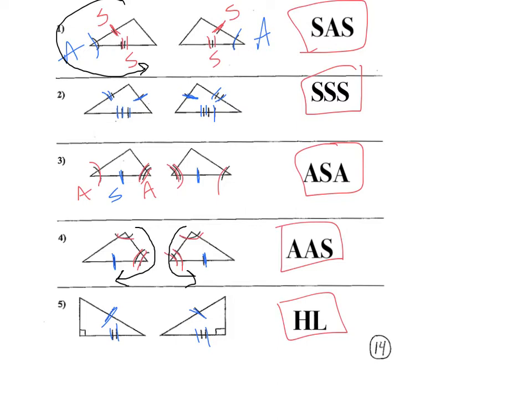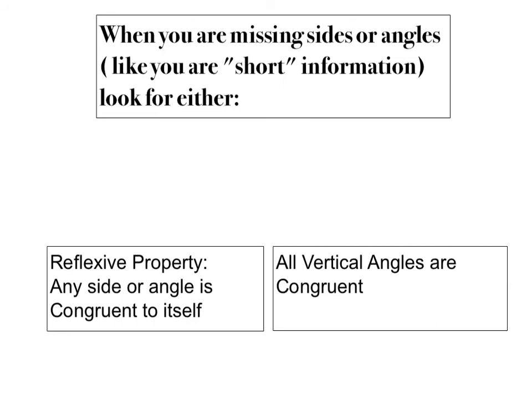I need you to write these two definitions down. On the next page, when you are missing sides or angles — when you're short information — you should either look for the reflexive property or vertical angles. The reflexive property tells us that any side or angle is congruent to itself, and we mark that with an X. Vertical angles are congruent — angles that are across from each other are vertical.